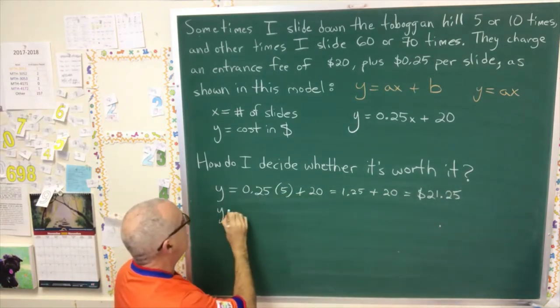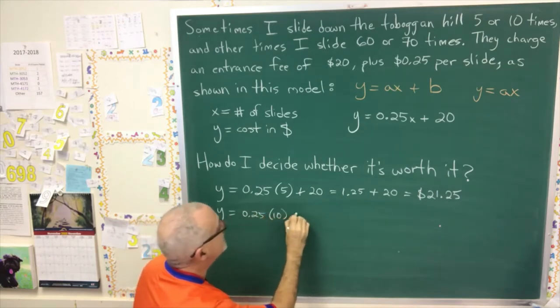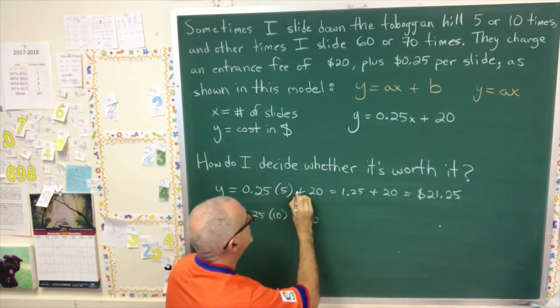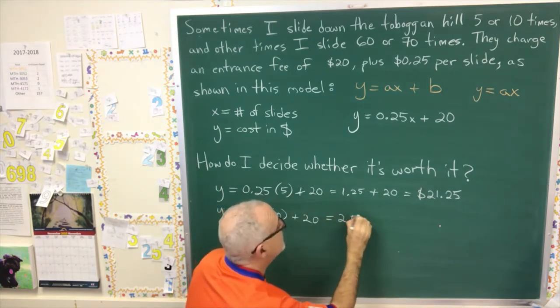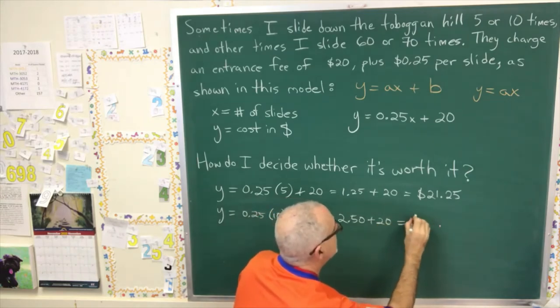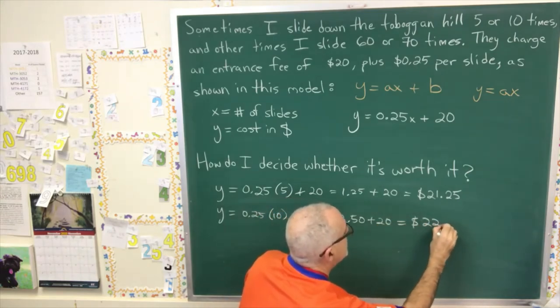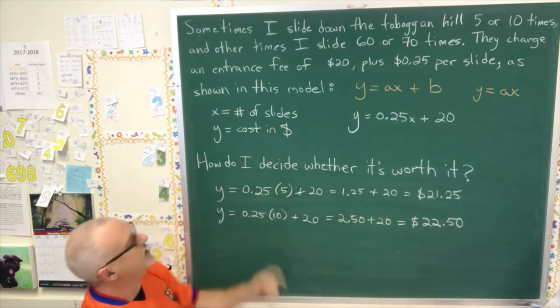Now, we just have to keep doing this. Y equals 0.25 times 10 plus 20, which is 2.5 plus 20, which is a cost of $22.50. How about 60 or 70 times?